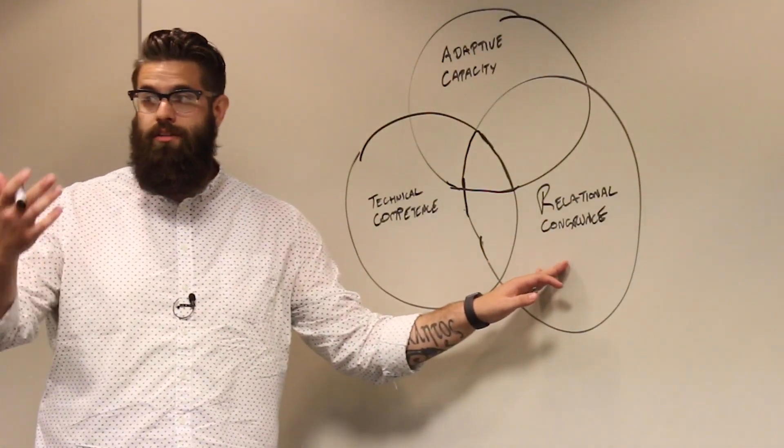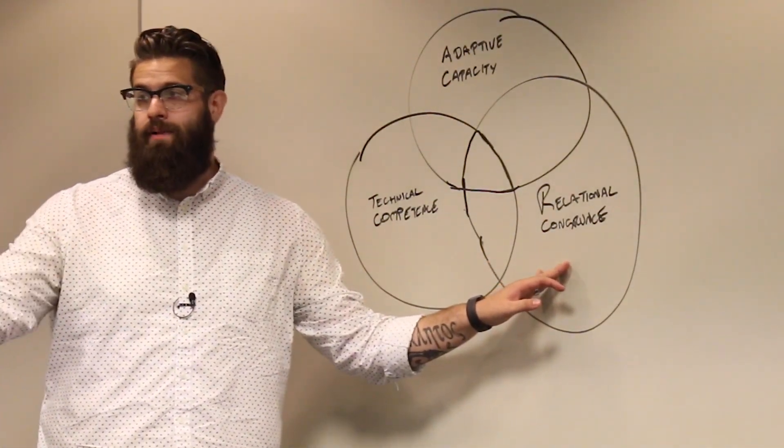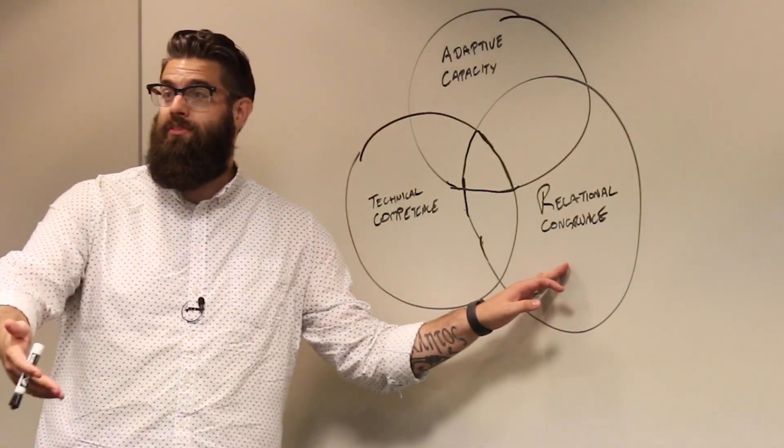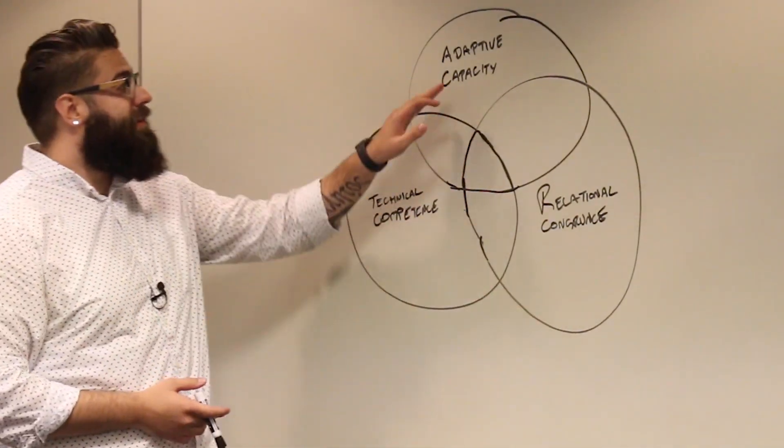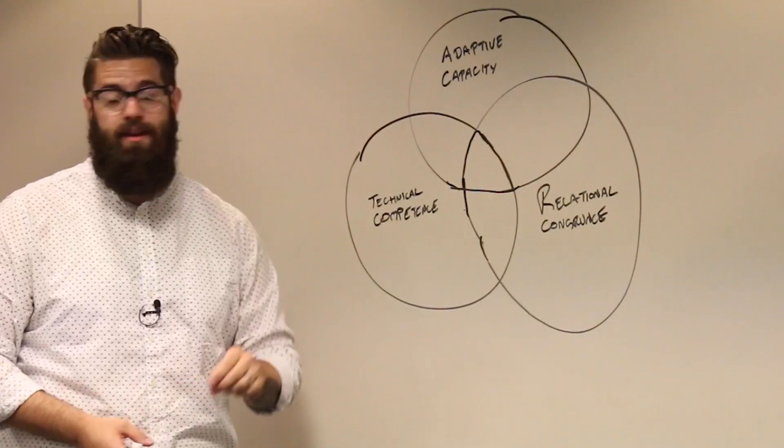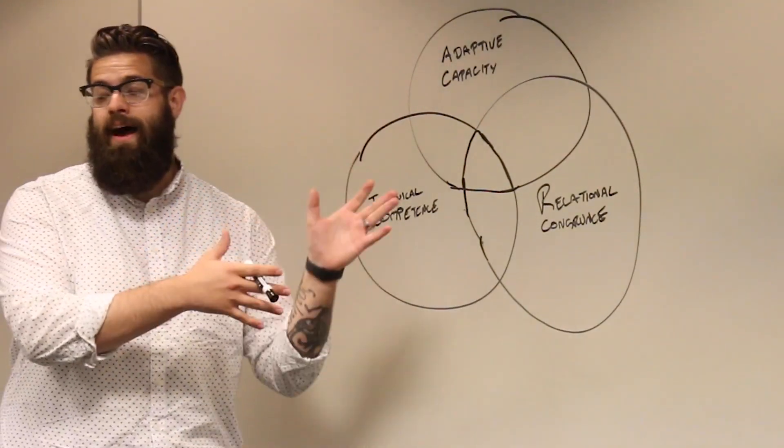Relational congruence. Essentially, are you the same person you are on and off the platform as a leader and then in the one-on-one conversation or even with your family? And then lastly, and this is what I want to focus on today, this thing he calls adaptive capacity.